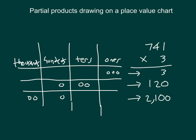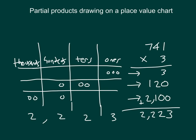What would the total product be, recorded in the vertical problem and in our place value chart? What would we do with all those numbers? Same as before, we would add them. So we have three, two, two, two — two thousand two hundred twenty-three, which we also could read from our place value chart: three in the ones, two in the tens, two in the hundreds, and two in the thousands. The number two thousand two hundred twenty-three.